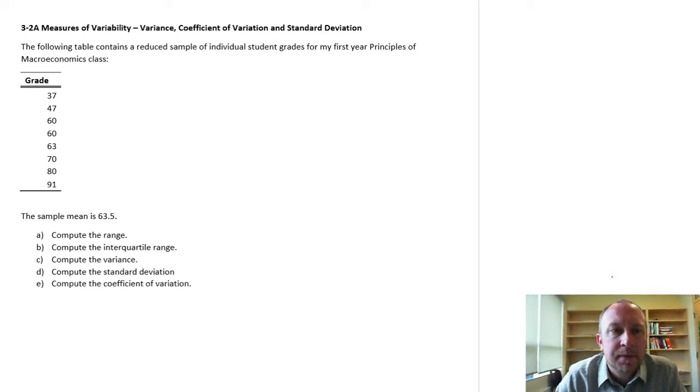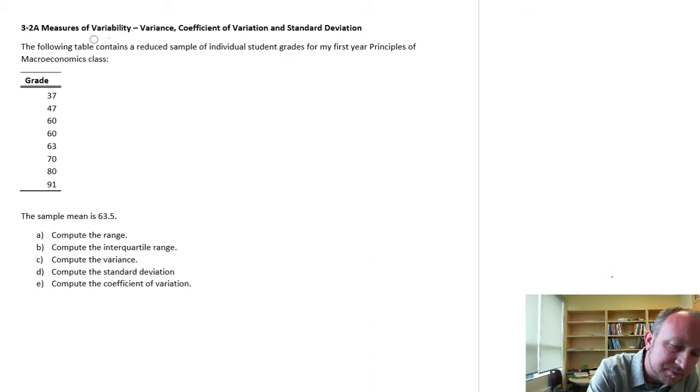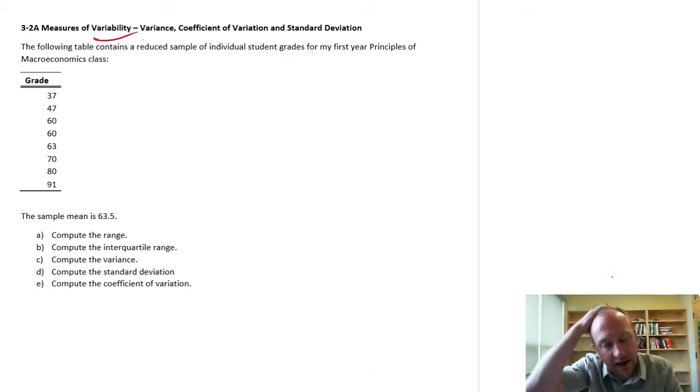Hello and welcome back. This is going to be the first video on the section on measures of variability. So here we're going to be looking at really the shape and the spread, the shape of the distribution, so the picture, the shape of the histogram that corresponds with the frequency of observations. And so this is really going to be describing the spread of observations from the mean and how they spread out from there.